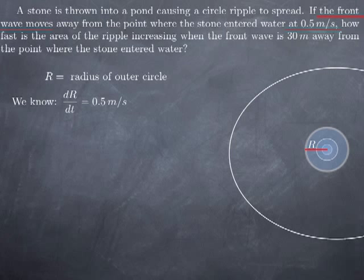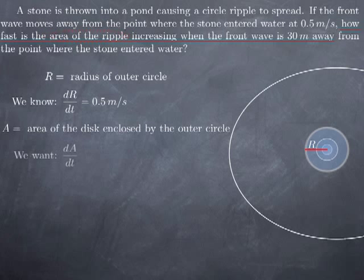In other words, the derivative of R, when R is viewed as a function of time, is 0.5 mps. Now what are we looking for? We want to know how fast the area of the ripple is increasing when the front wave is 30 meters away. In other words, we are looking for the rate of change of the area of the ripple. So we need to introduce a variable for this area — let's call it capital A, the area of the disk enclosed by the outer circle. This is again something that varies with time, and what we want to know is its rate of change, or derivative, with respect to time.